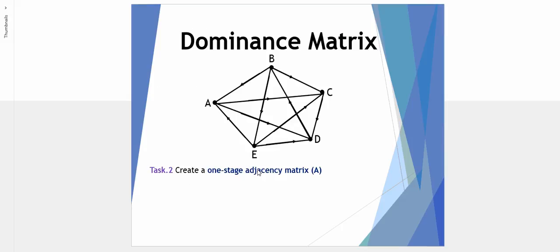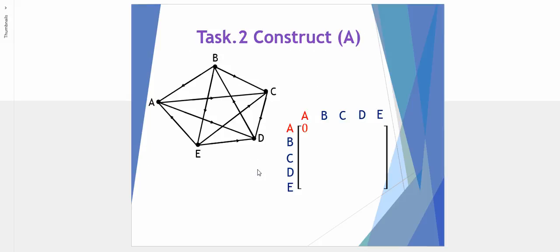The next step is to create a one stage adjacency matrix which we often refer to as matrix A. This is a simple process. So we have here the outline of a matrix, and we've got labeled players A, B, C, D and E along each row of the matrix, and players A, B, C, D and E along each column of the matrix.